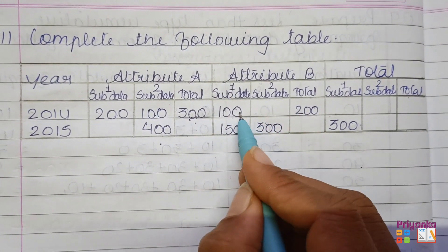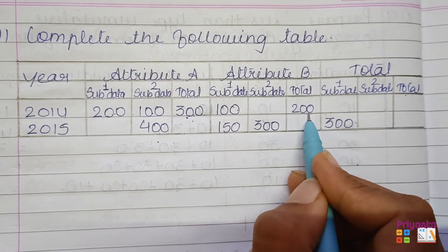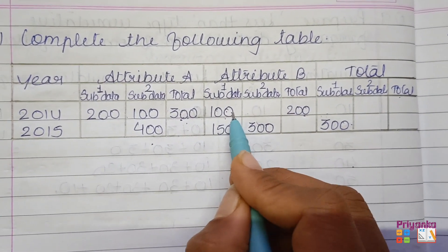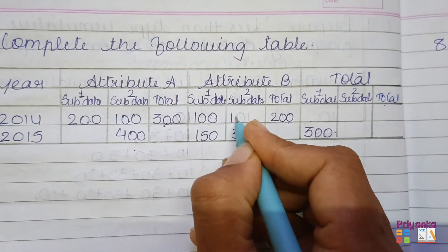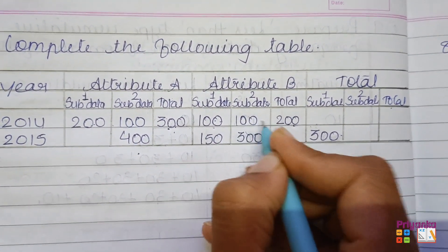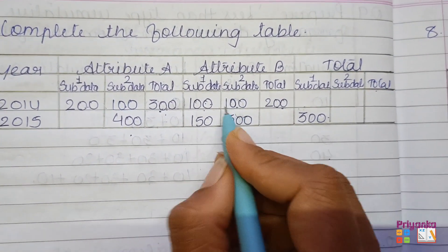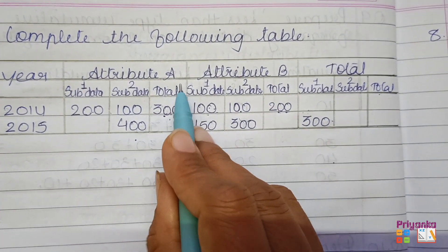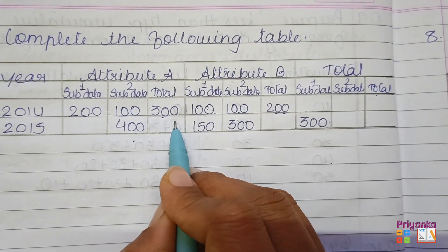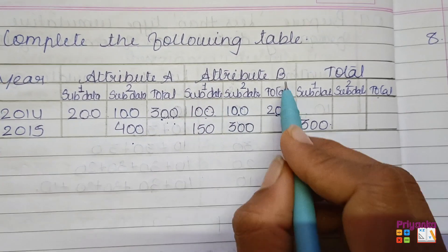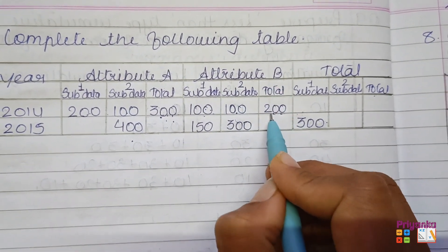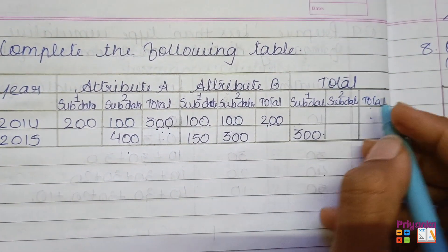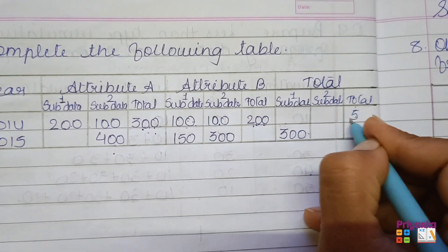In the same way, continuing with the next: the total is 200 and the first information is 100. So 100 subtracted from 200 gives the second sub-data as 100. So 100 plus 100 becomes 200. Now add attribute A total of 300 and attribute B total of 200 to get the grand total of both attributes, that is 500.